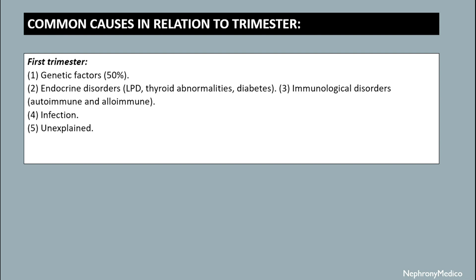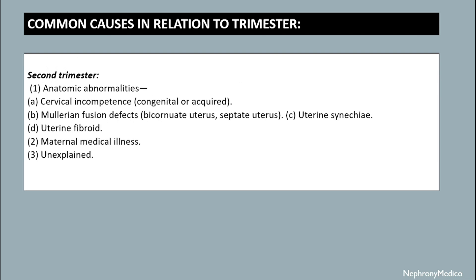Common causes in relation to trimester: in the first trimester, abortion may be due to genetic factors or endocrine disorders like luteal phase defect, thyroid abnormalities, and diabetes, as well as immunological disorders such as autoimmune and alloimmune disorders, infection, or unexplained conditions.